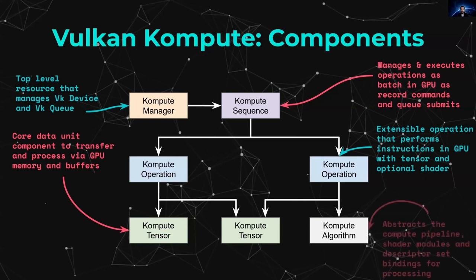Optionally, an operation can also have what is referred to in the compute world as an algorithm. An algorithm abstracts the concept of the Vulkan pipeline, the descriptor sets, and the specific shader code, allowing you to say: I want to run this code on the GPU with these specific data structures in this particular way. There's an almost one-to-one mapping between Compute components and Vulkan components, explicitly to reduce ambiguity.